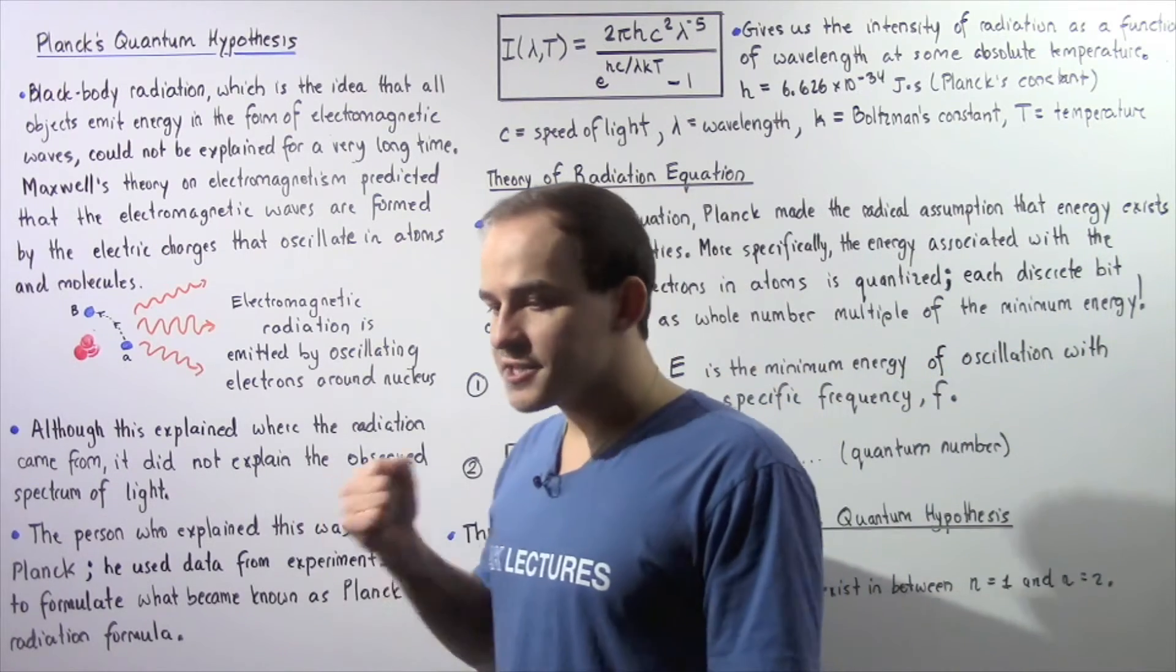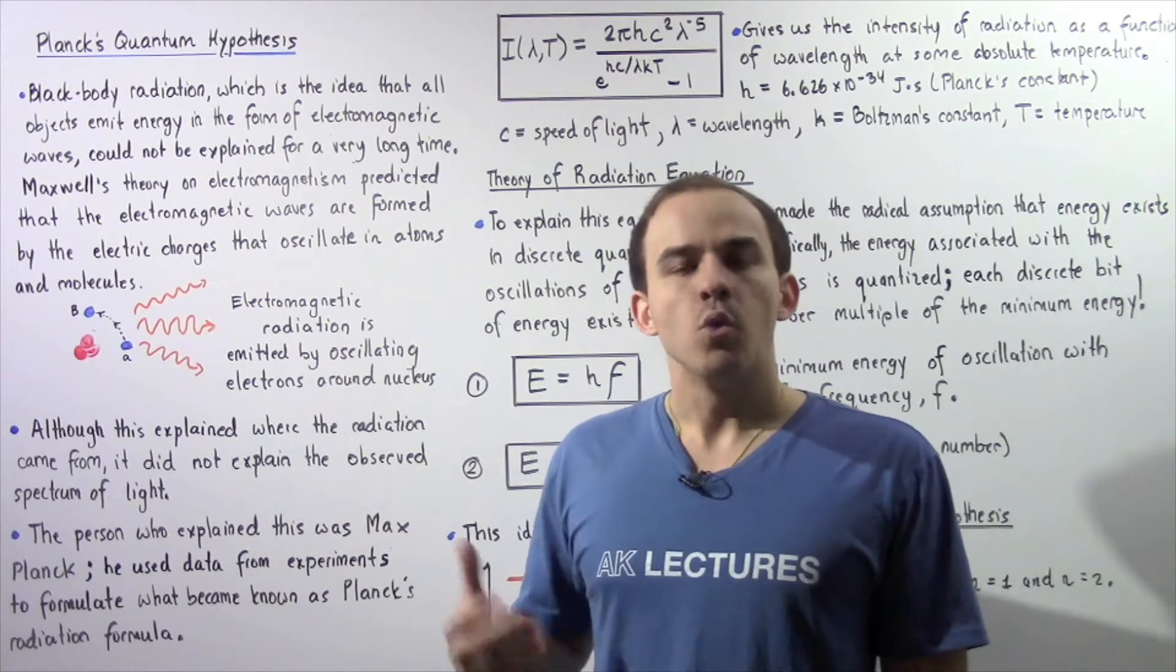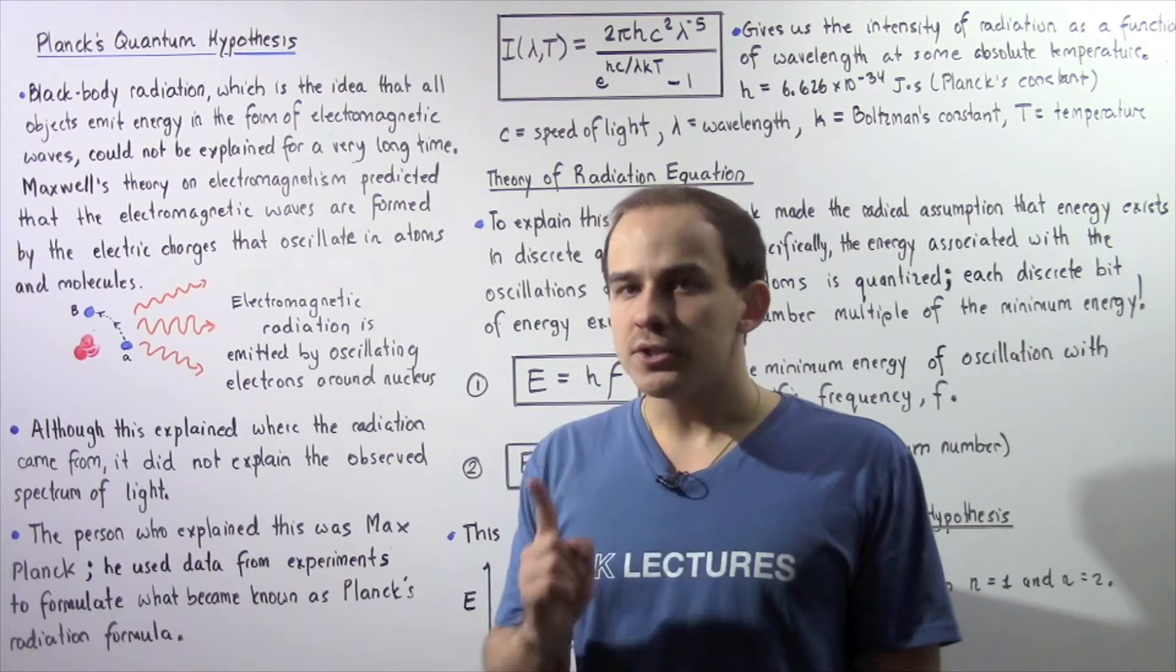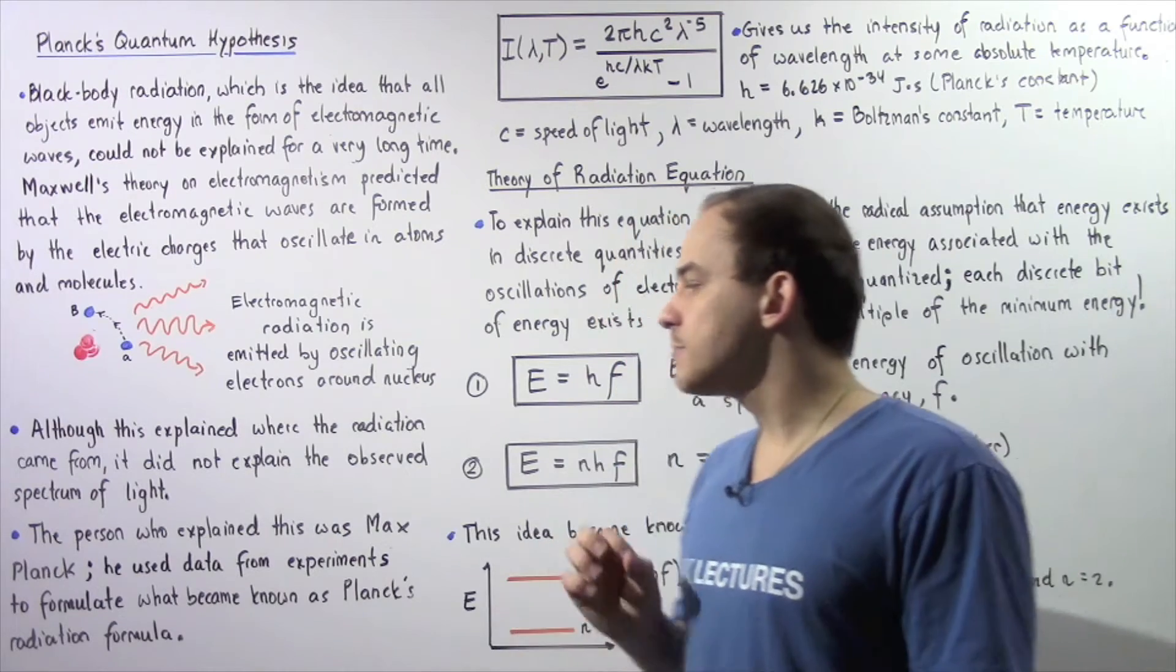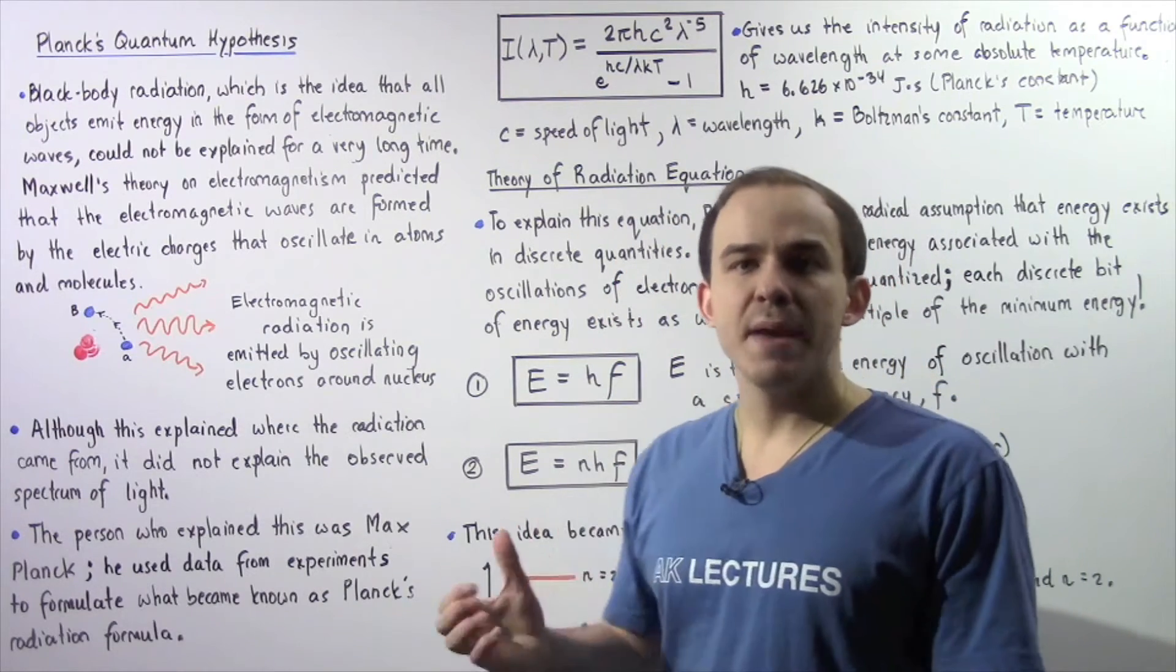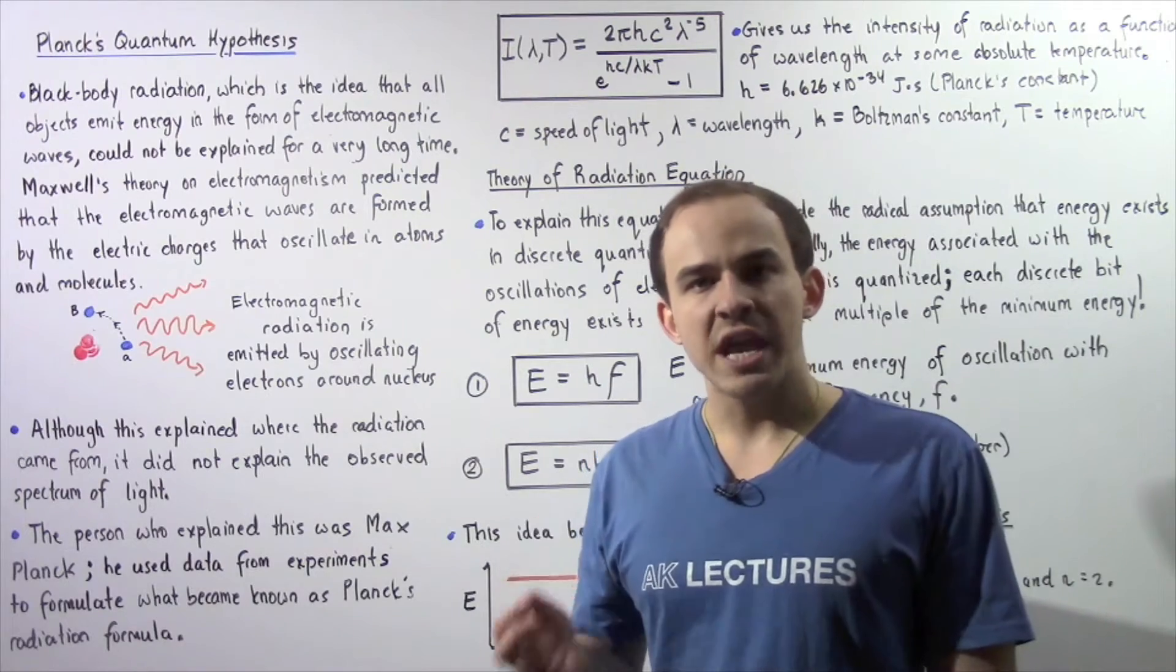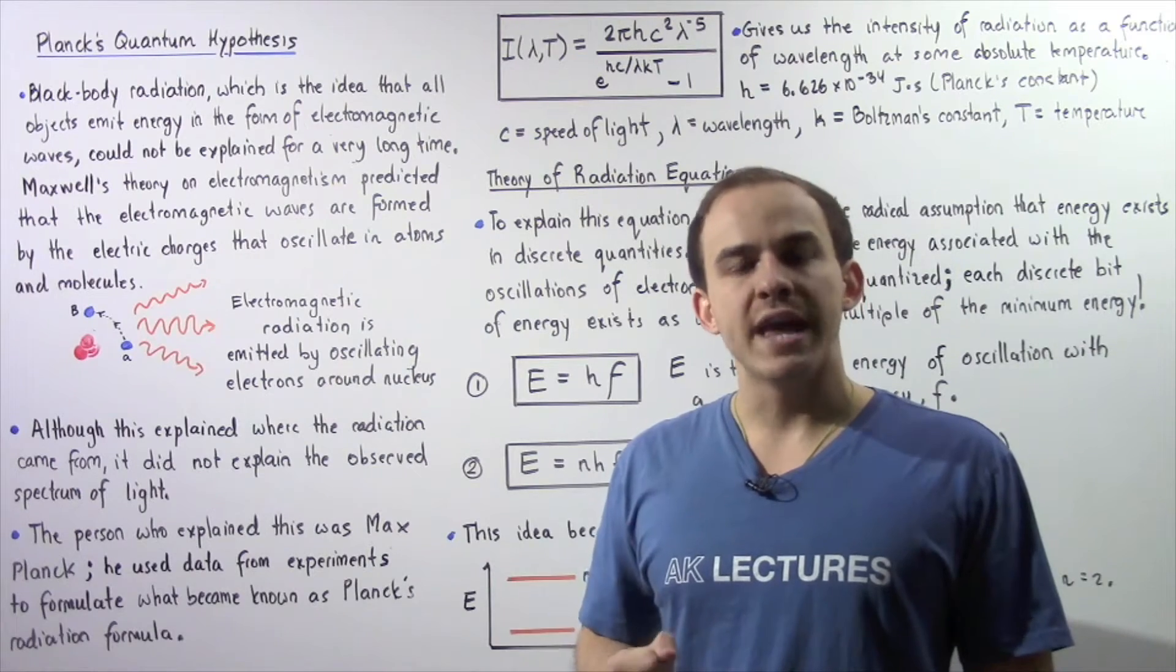So basically, it could not explain why a certain object emitted one color while another object emitted light with a different color. Now the person that explained this phenomenon is Max Planck. Max Planck basically used the data and the observations obtained from experiments at that time to formulate what became known as Planck's radiation formula.